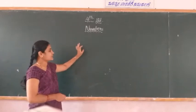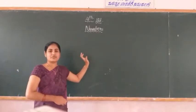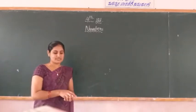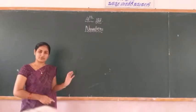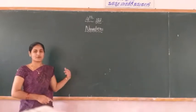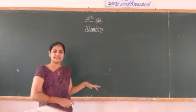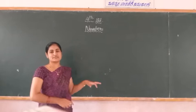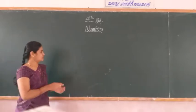This is the second chapter of the 4th standard: 4-digit numbers. Today we discuss about 4-digit numbers — how to read them and how to write them in the place value chart.